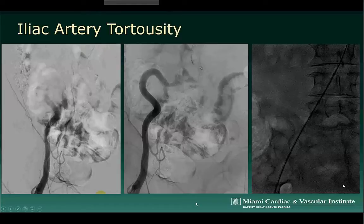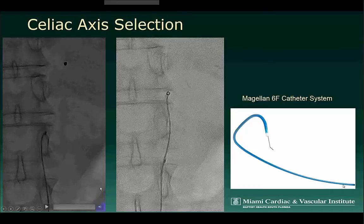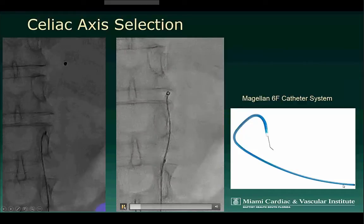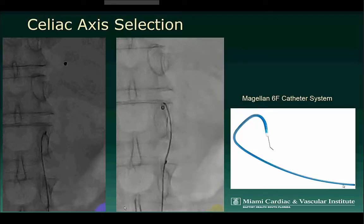The utilization of a 6-French Magellan robotic catheter in conjunction with a long sheath allowed for straightening of the robotic system and stable access for subsequent selection of the celiac artery. This catheter allows for extreme flexibility, bending in any orientation as necessary. The second video clip demonstrates selection of the celiac axis: the catheter is bent downwards and moved downwards until the celiac axis is selected, then advanced into the celiac axis.